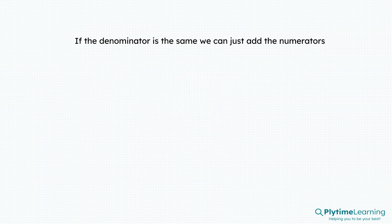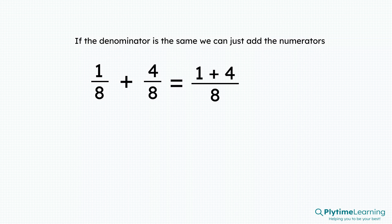If the denominator is the same, we can just add the numerators. One eighth plus four eighths — the denominators are the same, so we can just add the numerators. It's the same as one plus four divided by eight. One plus four equals five, so it's the same as five eighths.